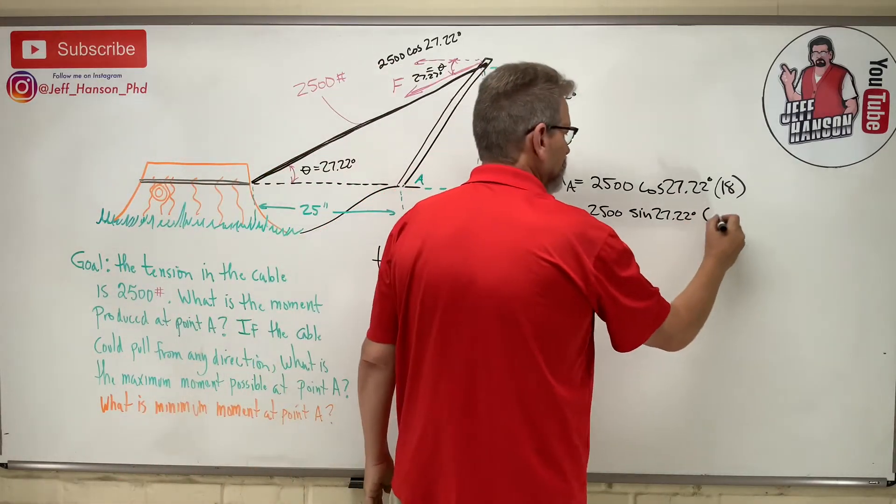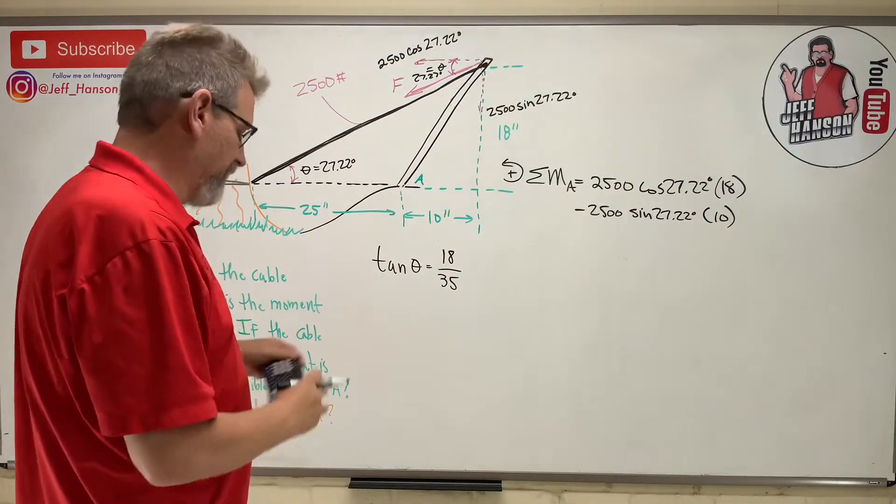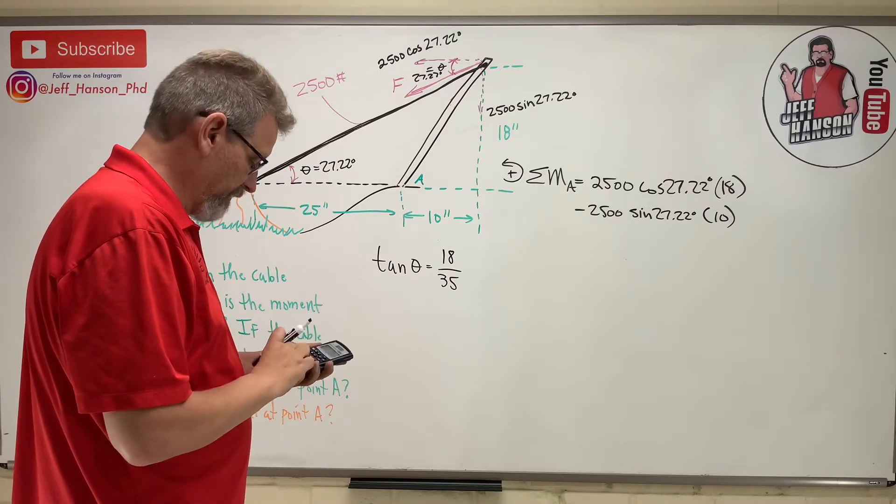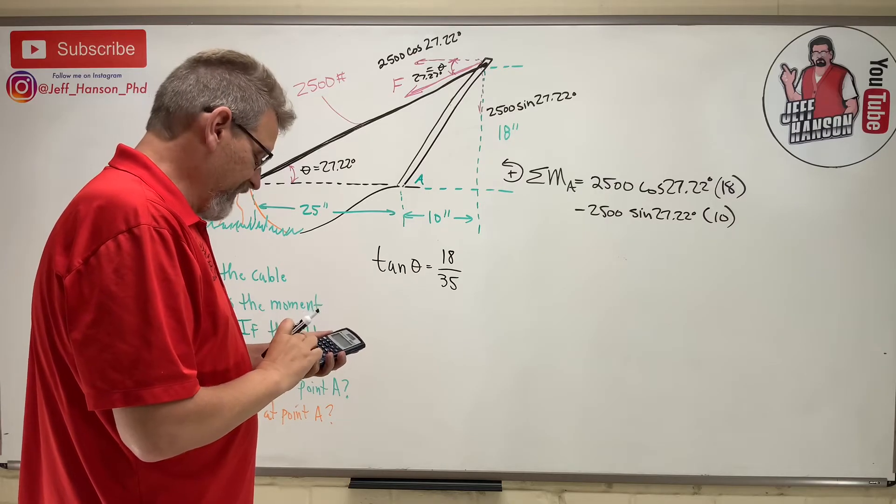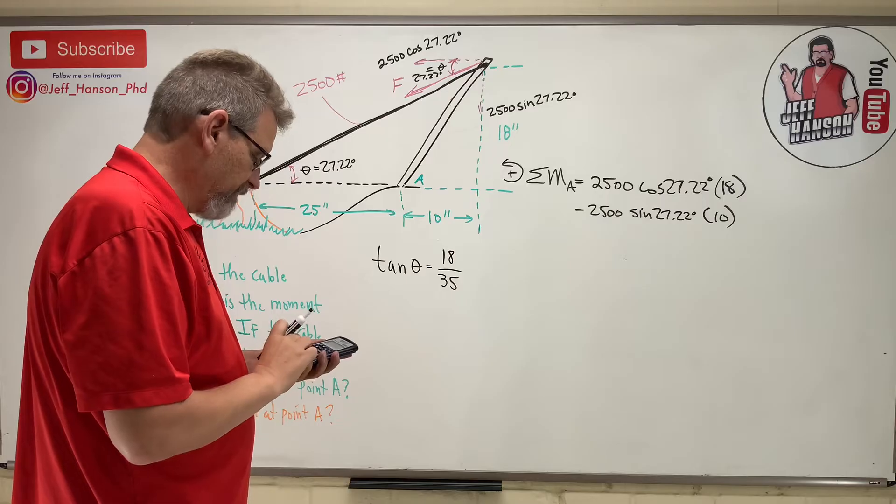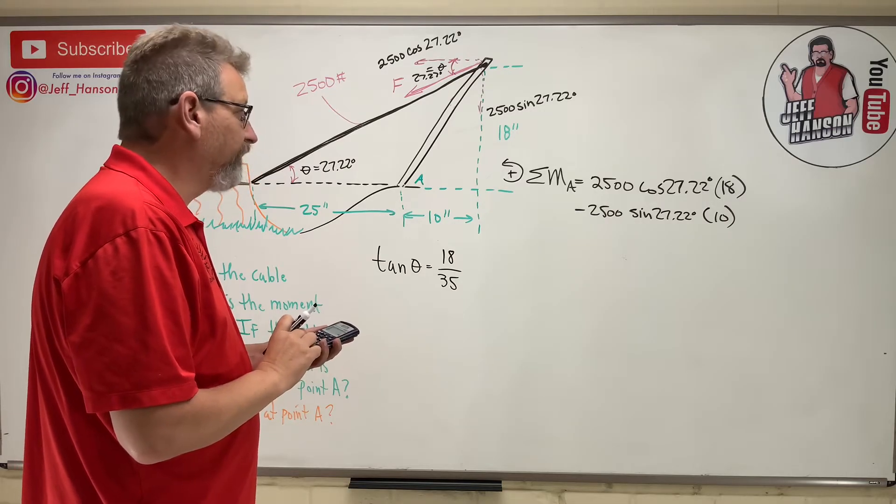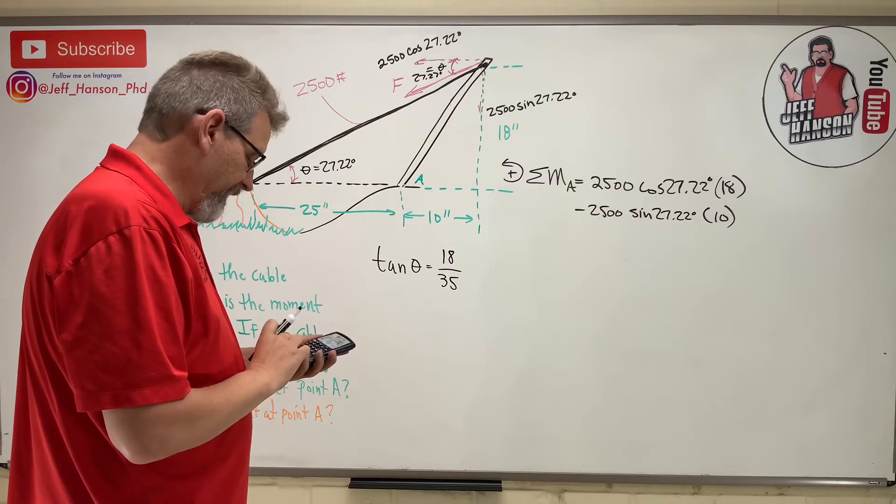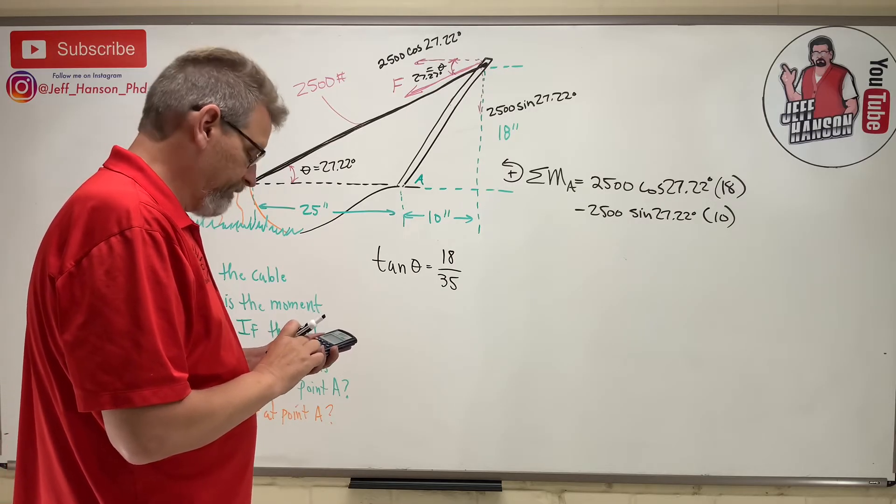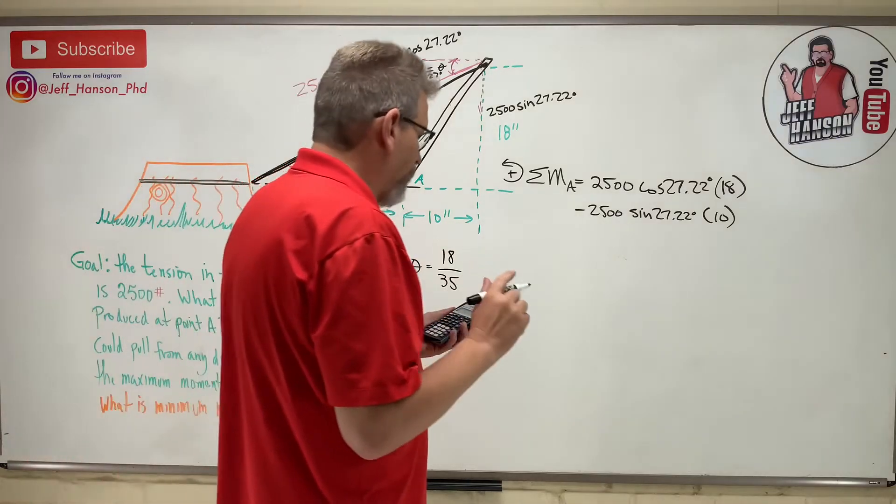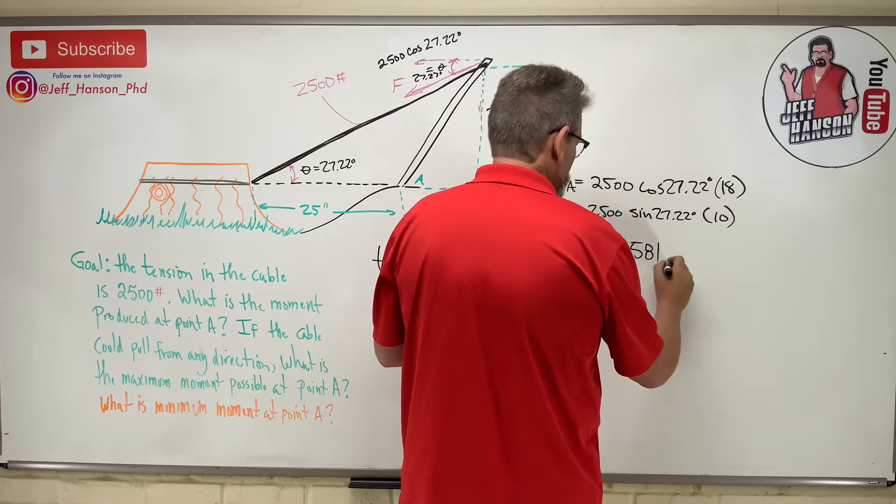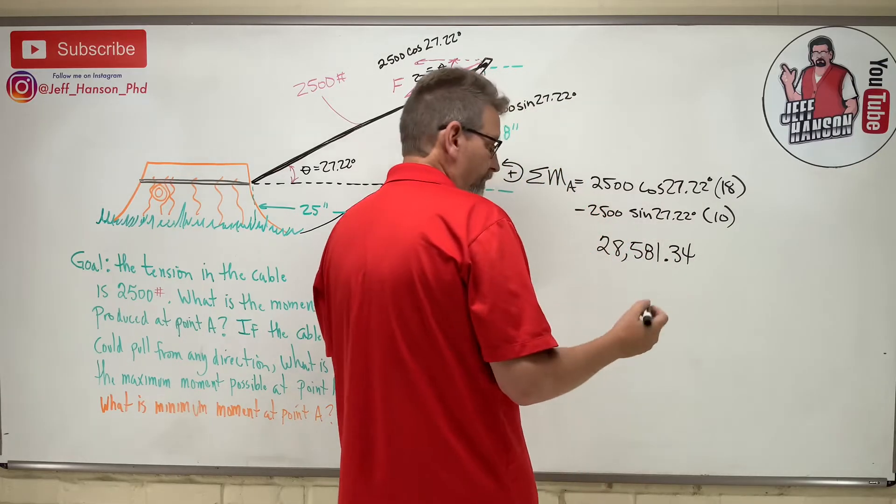So here we go, we're fixing to get it ready. Clear. 2500 times cosine 27.22 equals, times 18 equals 40,016. And then minus 2500 times the sine of 27.22 times 10. So that equals 28,581.3 inch-pounds.